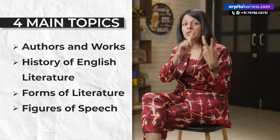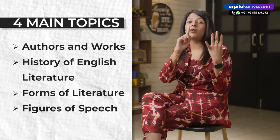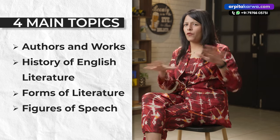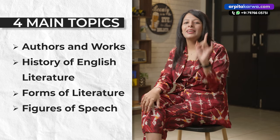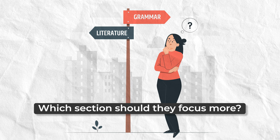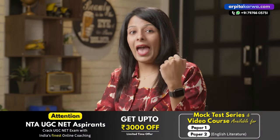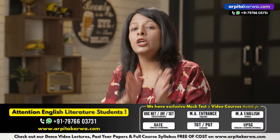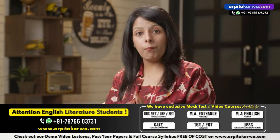Summarizing, there are four main topics in the literature portion: Authors and Their Works, History of English Literature, Forms of Literature, and Figures of Speech. If you master these four topics, there is nothing that can stop you from clearing the TGT PGT exam. Many students ask which section to focus on more — grammar or literature. As per my advice, you need to equally focus on both sections. Since grammar is easy and has limited syllabus, you can give it less time, but you need greater effort, time, and guidance for the literature part.